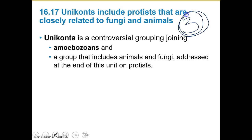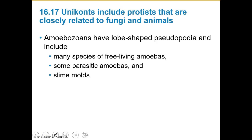Our third overall group of protists is the Uniconta, or Uniconts. This is a controversial grouping because it includes amoebozoans, which is a group that also includes animals and fungi. Animals are actually more closely related to fungi than we typically think. Amoebozoans have lobe-shaped pseudopodia and include free-living amoebas, parasitic amoebas, and slime molds.